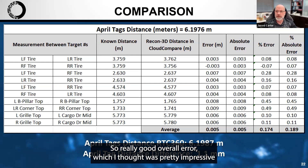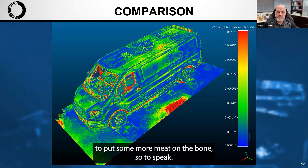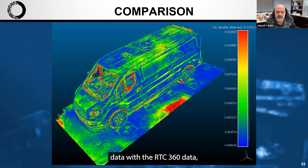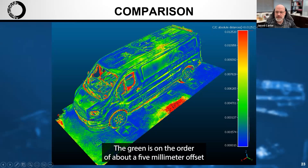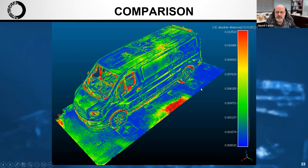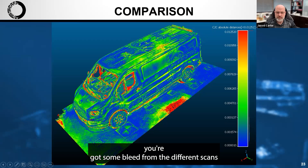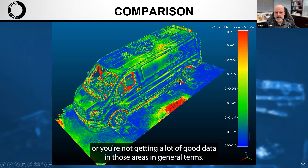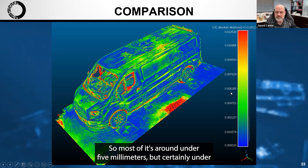Really good overall error, which I thought was pretty impressive considering the cost of both scanning methods. To put some more meat on the bone, I also did an alignment of the Recon 3D data with the RTC 360 data and then did a color map showing the offset of nearest neighbors. The red areas are about a 12 millimeter offset, the green is on the order of about 5 millimeters, and the blue is on the order of about 1 millimeter. A lot of the red areas are just zones where there's scan bleed or not great overlap — in general terms, most of it is blue and green, so most of it is under 5 millimeters and certainly under a centimeter.